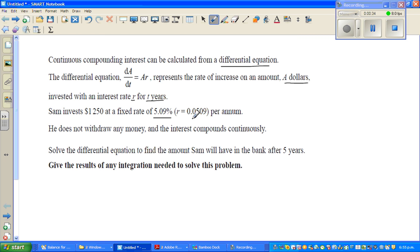Sam invests $1250 at a fixed rate of 5.09% (as a decimal r = 0.0509) per annum. He does not withdraw any money and the interest compounds continuously.